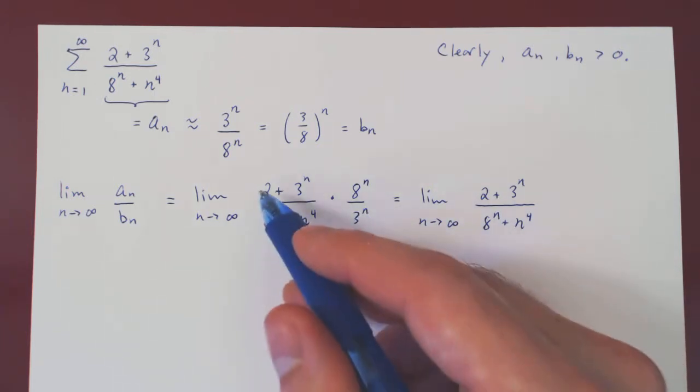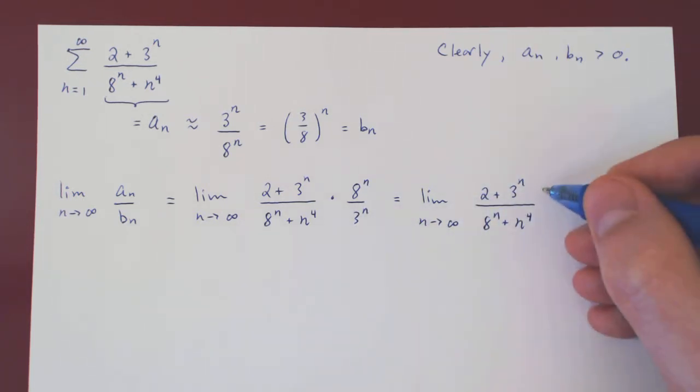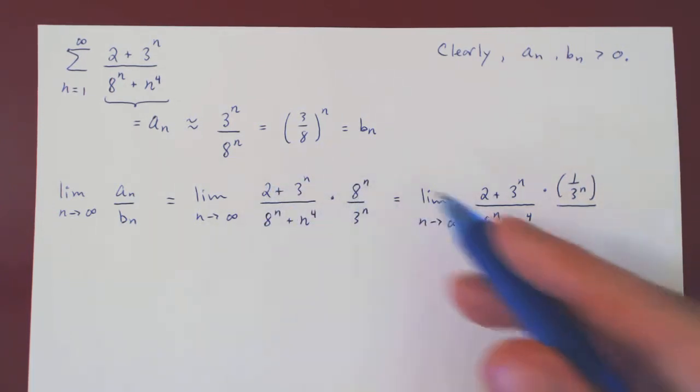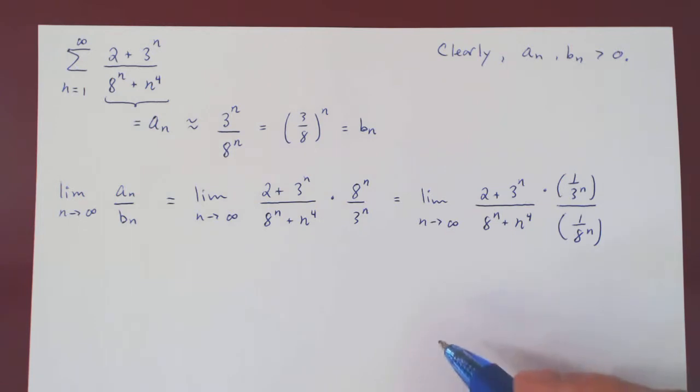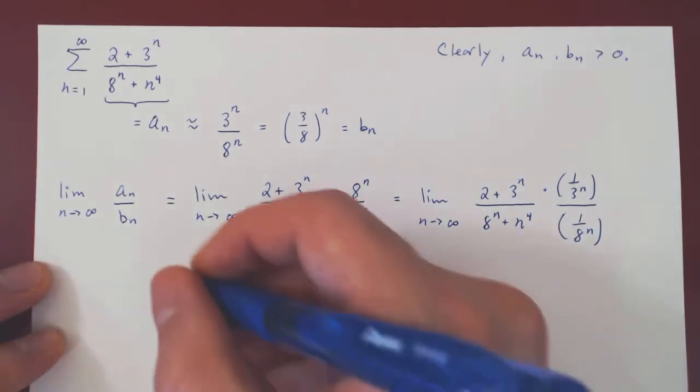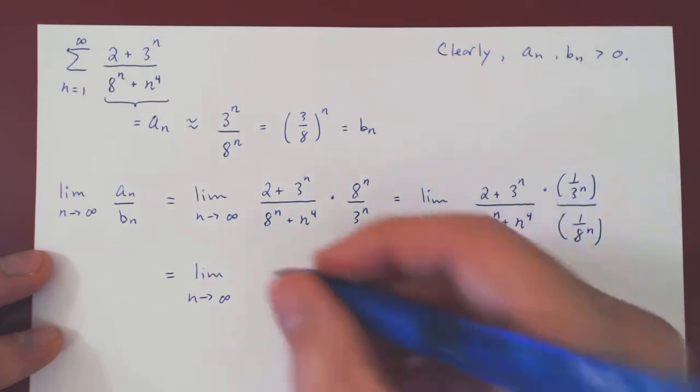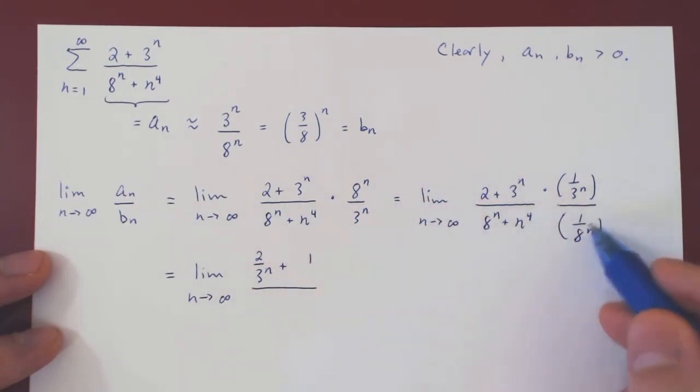Look at the over 3 to the n. We are dividing 2 plus 3 to the n by 3 to the n. So if you divide something by 3 to the n, it's the same as multiplying it by 1 over 3 to the n. And now if you multiply this fraction by 8 to the n, it's the same as if you were to divide it by 1 over 8 to the n. As 1 over 1 over 8 to the n is simply 8 to the n. And now we can multiply out, and we will have a very straightforward limit. So we have 2 over 3 to the n plus 1 over 1 plus n to the 4 over 8 to the n.